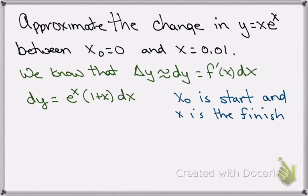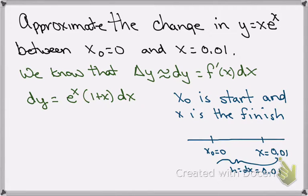Some books call x not as a or c, but it's still the starting x. So if we have a little number line here, if we start at x not equals 0 and we end up at x equals 0.01, then the h or dx is equal to 0.01. So now we have everything that we need to plug in on this right-hand side to actually solve.